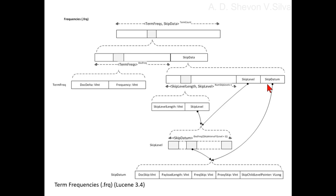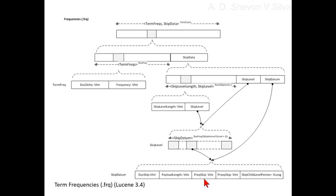All skip data in all levels except the last level have a skip child level pointer, which points to the next skip level. Each skip datum (skip node) contains the following information: document number, payload length, frequency skip, proxy skip, and skip child level pointer.